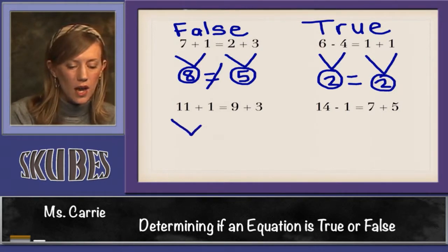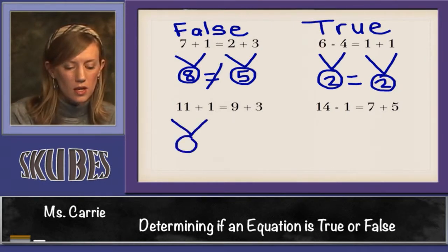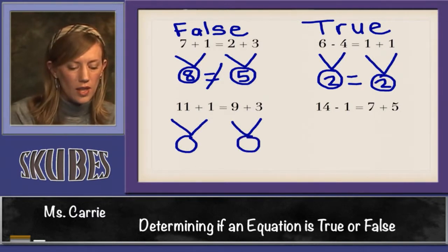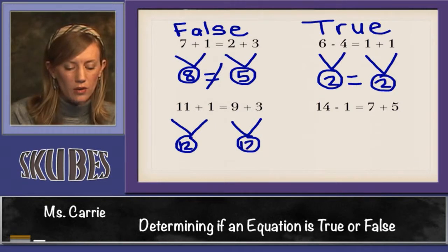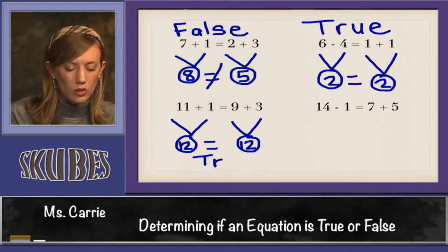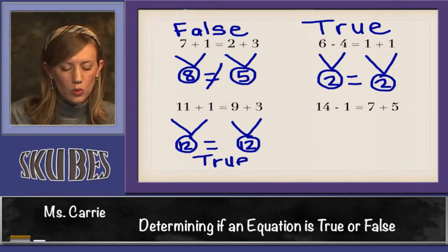Let's look down here at 11 plus 1 and 9 plus 3. Well 11 plus 1 is 12 and 9 plus 3 is 12. Are these equal? Yes they are. This is true. 12 is equal to 12.